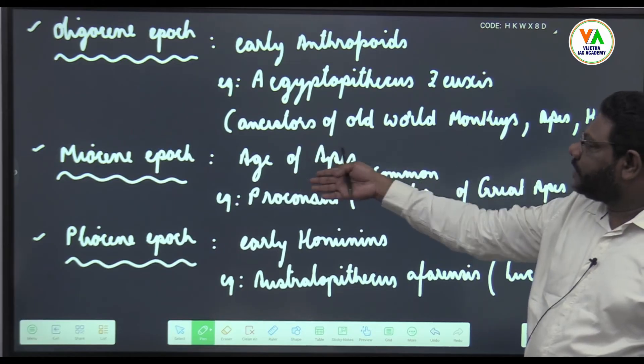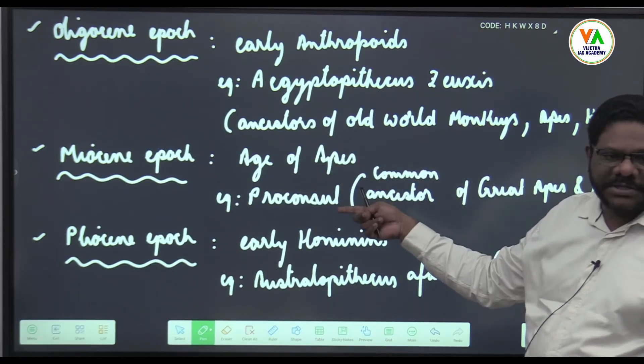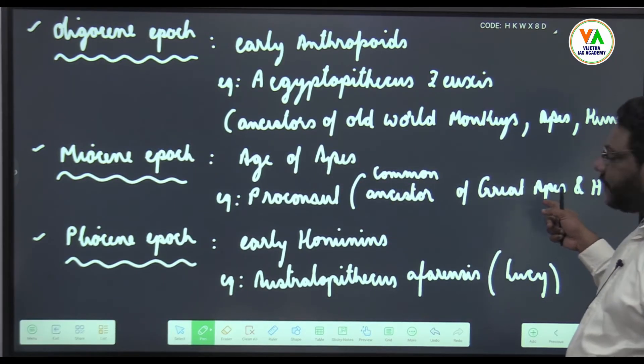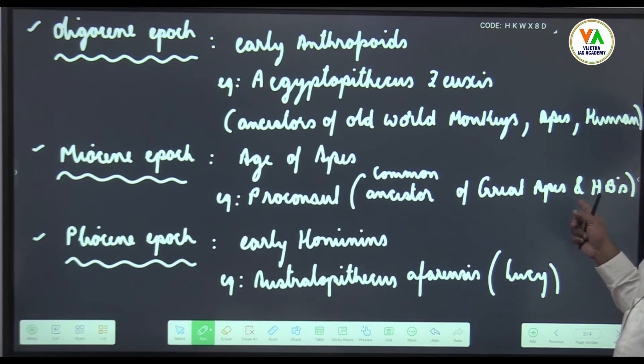And then in Miocene which is the age of apes, Proconsul which is a common ancestor for great apes. Great apes are chimpanzee, gorilla, bonobos, orangutan. All these are considered to be great apes. Great apes are bigger size. And human beings.